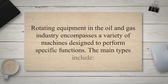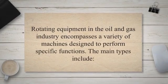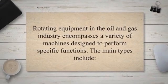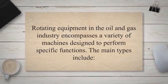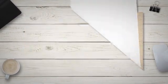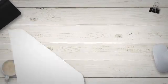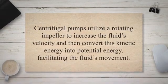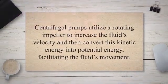Rotating equipment in the oil and gas industry encompasses a variety of machines designed to perform specific functions. The main types include pumps, compressors, turbines, fans, and blowers.